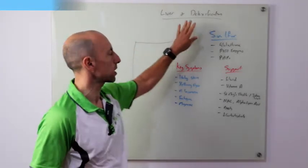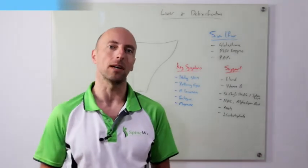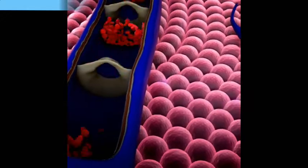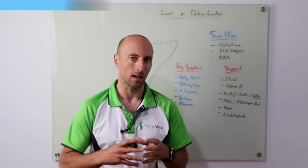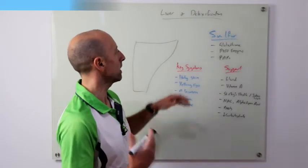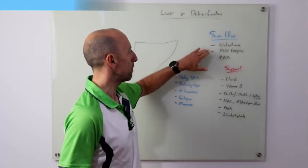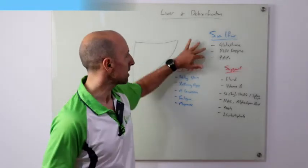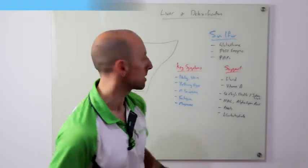And when we start talking about detoxification, really what we're talking about more than anything is a substance known as sulfur. So sulfur is a main substance that we use to detoxify, and it's always derived from a substance known as cysteine, which is a sulfur donor. And really what we're doing with that system is forming three main substances: glutathione, our P450 enzyme complex, and a substance known as PAPS.